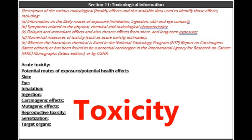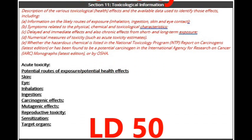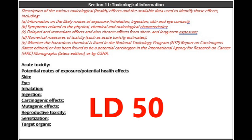Next are numerical measures of toxicity, such as acute toxicity estimates. If I were to take 100 test subjects and expose them to a chemical and 50 of them die, then the toxicity rate would be Lethal Dose 50, or LD50, because 50% of the exposed group died.